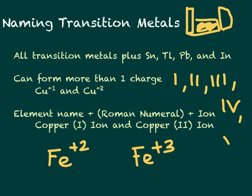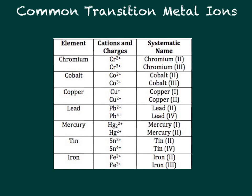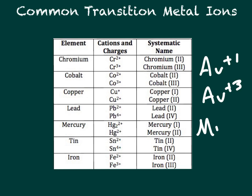Sometimes there's a charge of five, which would be Roman numeral V, but that doesn't happen very often. This table shows some common transition metal ions, including chromium, cobalt, copper, lead, tin, iron. Gold can be either plus one (Au⁺) or plus three (Au³⁺), and manganese can be Mn²⁺ or Mn³⁺. These are some of the most common transition metal ions.